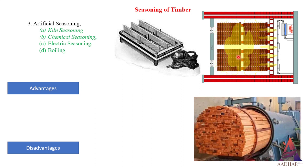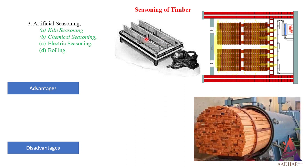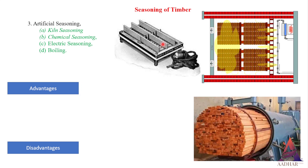Electrical seasoning. In the method of electrical seasoning, timber is subjected to high frequency alternating currents. The resistance of timber against electricity is measured at every interval of time. The process is stopped when the required resistance is reached, because the resistance of timber increases as the moisture content reduces. It is also called rapid seasoning.